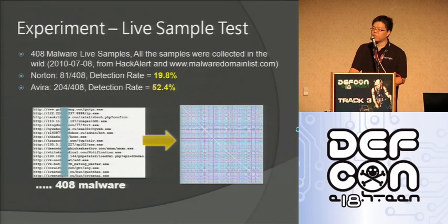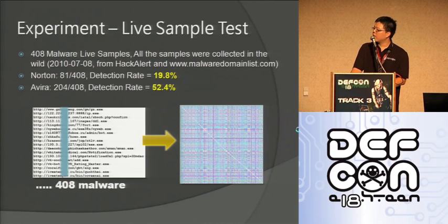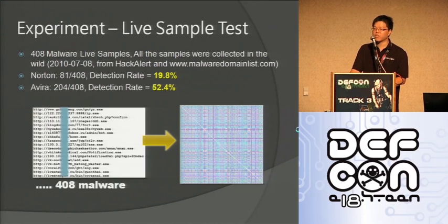In our test set, we have 408 malware samples collected on July 8th of this year. We have a product called HackAlert that can scan websites for trojans embedded in compromised sites, and we collect malware samples that way. We also tested these samples against existing antivirus tools, and the hit rate was not very good — some vendors had less than 20 percent, some around 50 percent. So these malware samples are really new.